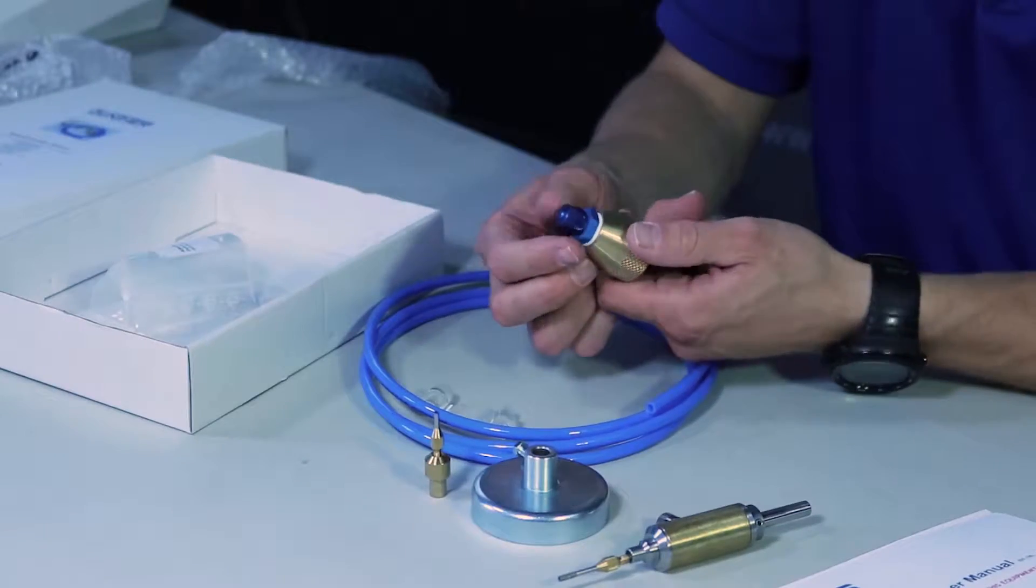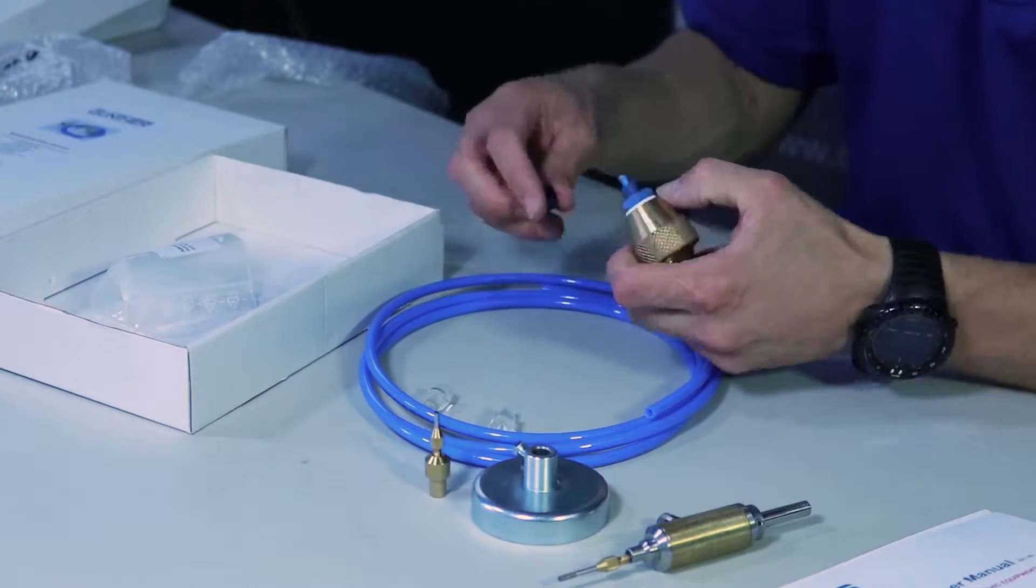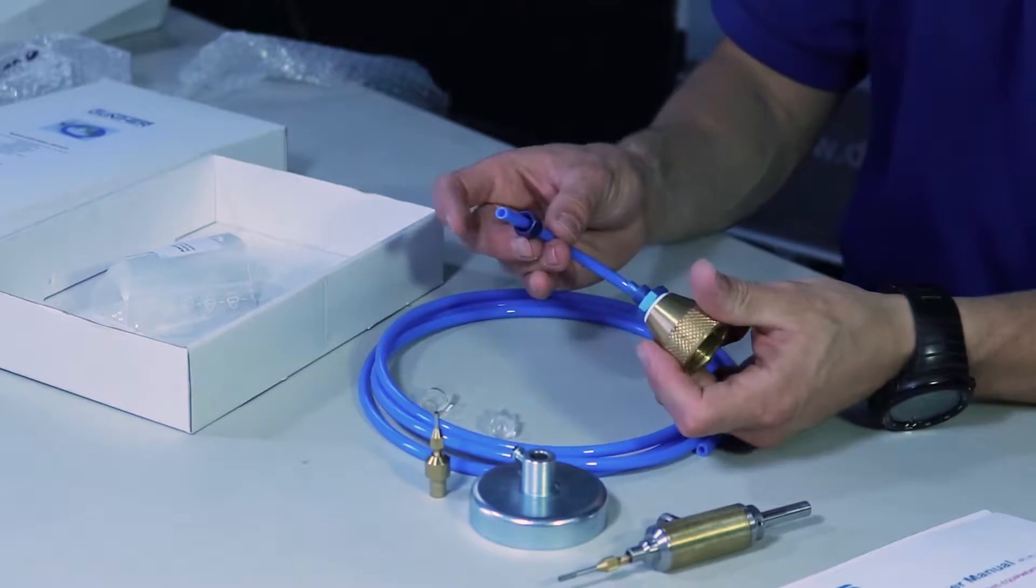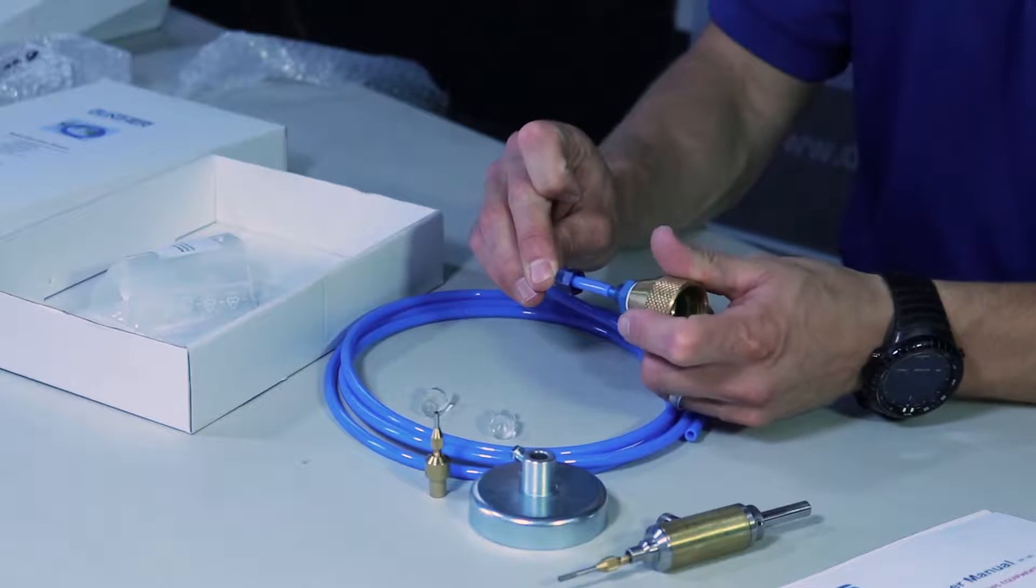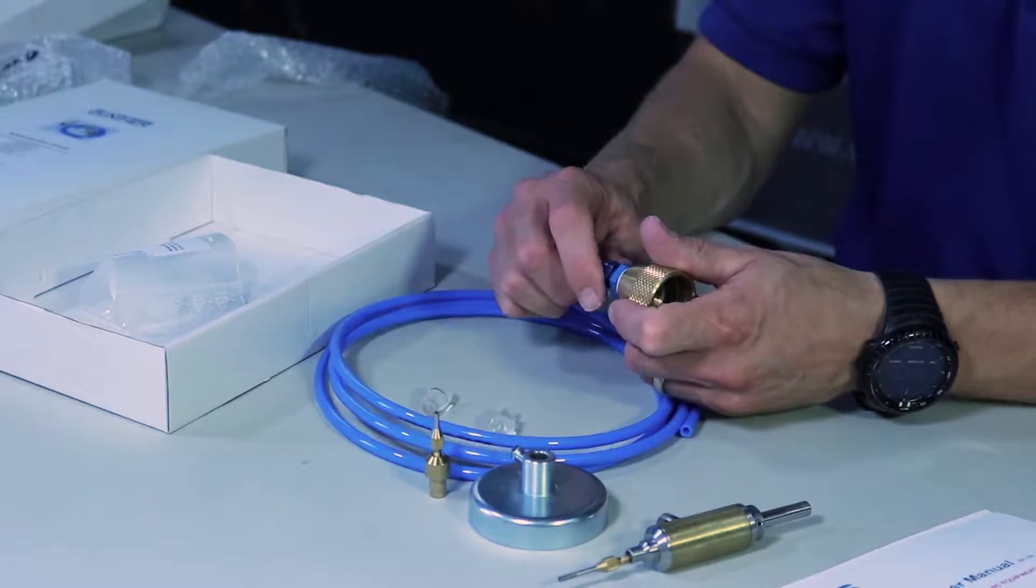Again, another compression fitting. This just goes on the other end of the hose. Put this on first then put it on the little barb there, and then screw this down to tighten it all down.